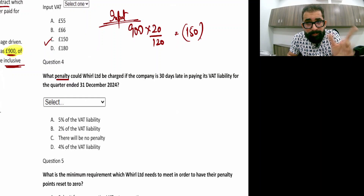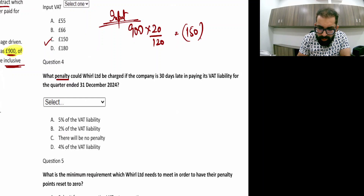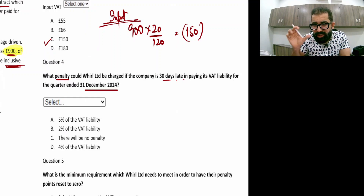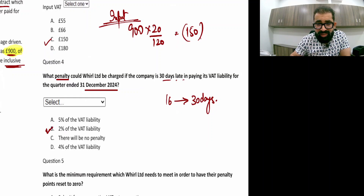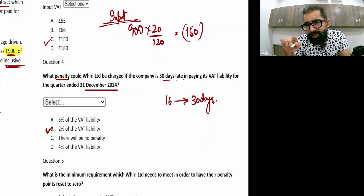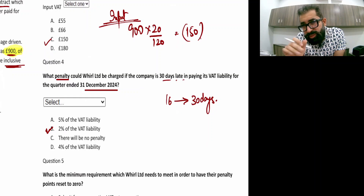Late payment interest is a separate topic. For the penalty: if the company is 30 days late for the quarter ended 31st December 2024 — if more than 0 but less than 30 days late, the penalty is 2% of the VAT liability. If more than 30 days late, 4% is the penalty rate, and a daily penalty also applies. Additionally, late payment interest is charged for whatever days you are late from the due date.